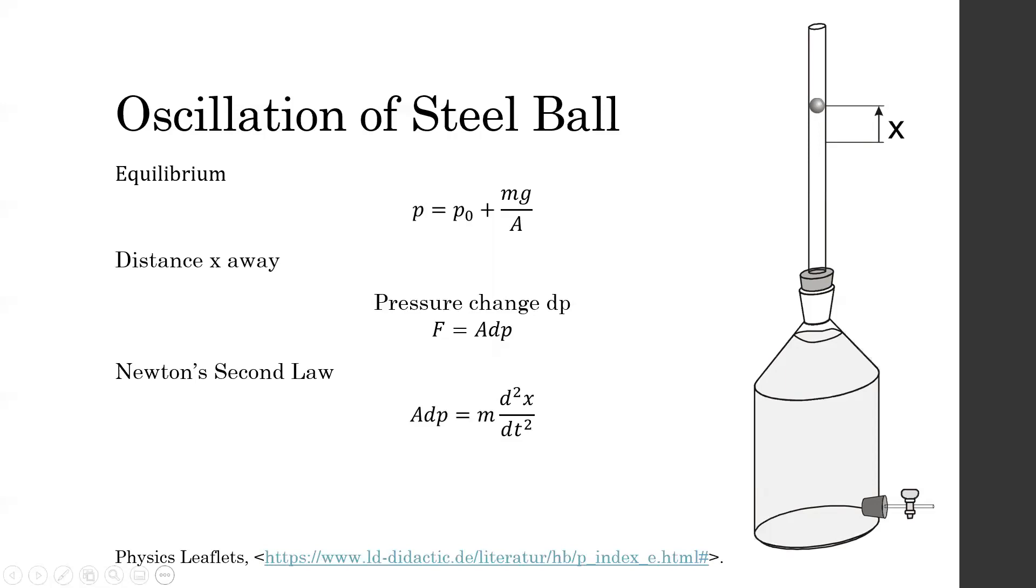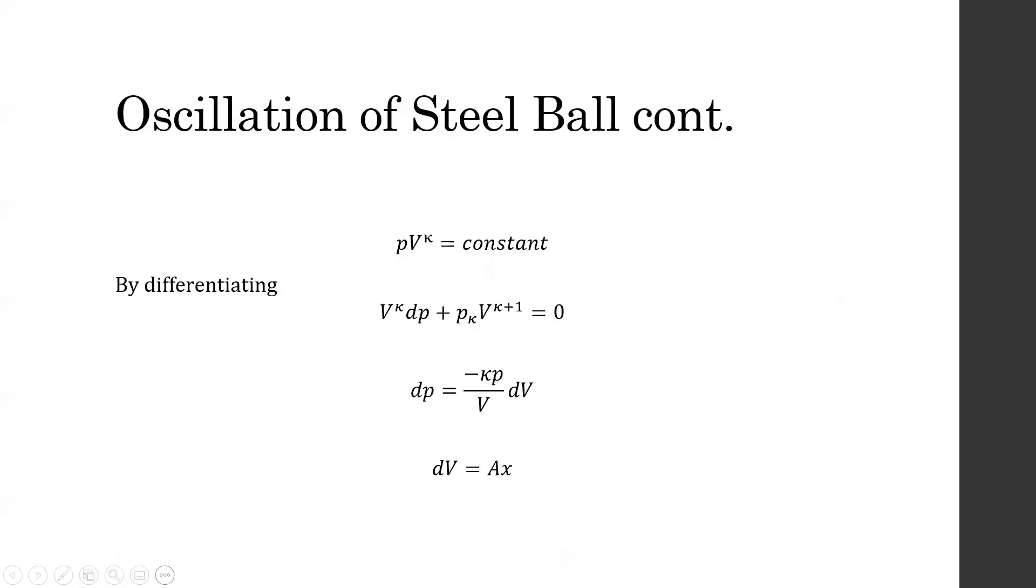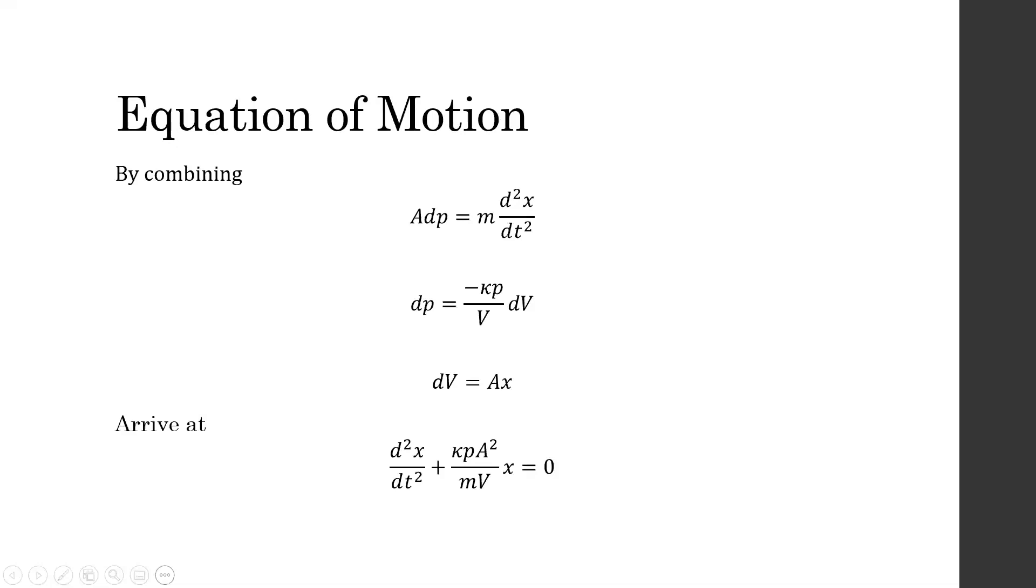Using the notation of Newton's second law, this force is equal to the mass of the ball times its acceleration, shown here as the second derivative of position. By differentiating Poisson's equation, we arrive at expressions for dp in terms of dV, and for dV in terms of x. Then, by combining these three expressions, we arrive at an equation of motion for the steel ball.